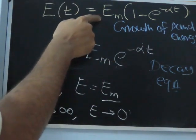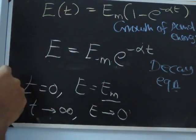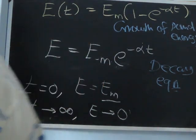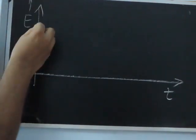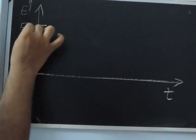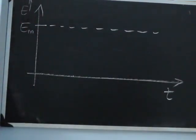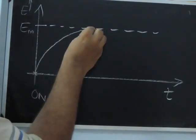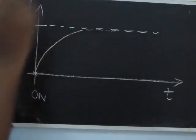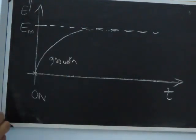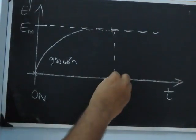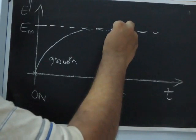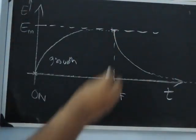So when you have the power source on, the energy increases according to the growth equation and reaches the saturation value E_M. When you cut off the power source, the energy decays according to the decay equation. Let's represent these pictorially. Taking time on the horizontal axis and energy density on the vertical axis, with E_max marked at the top: at T equal to 0, the source is switched on and energy rises exponentially tending to E_max. Then when the source is switched off, the energy decays exponentially back to 0 at infinity.